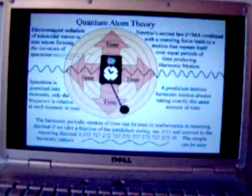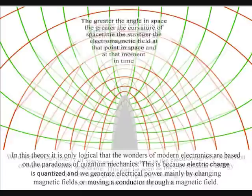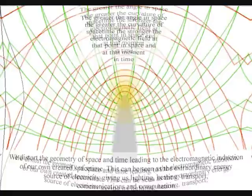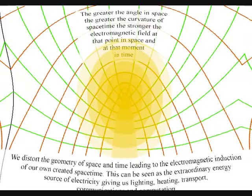In this theory it is only logical that the wonders of modern electronics are based on the paradoxes of quantum mechanics. This is because the electric charge is quantized, and we generate electrical power mainly by changing magnetic fields, or moving a conductor through a magnetic field. This will distort the geometry of space and time, leading to the electromagnetic induction of our own created spacetime, in other words, electricity.